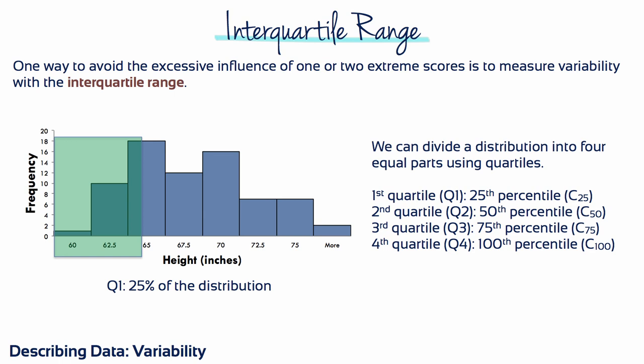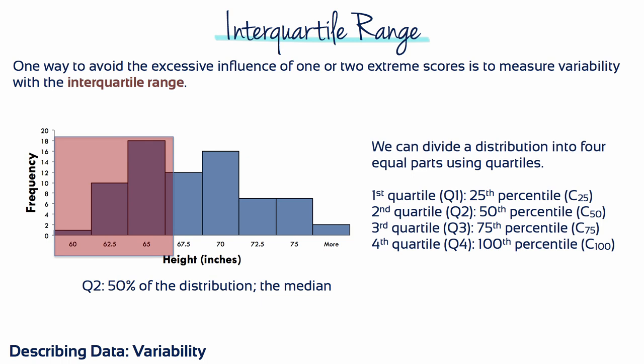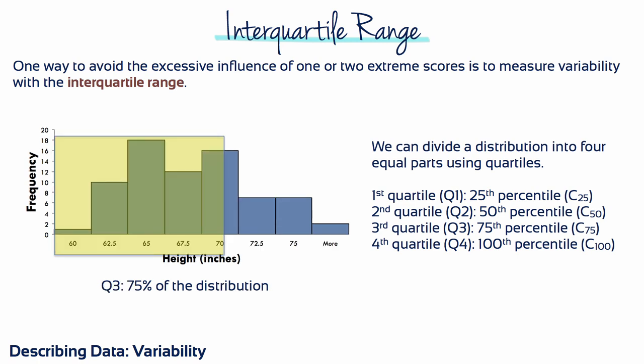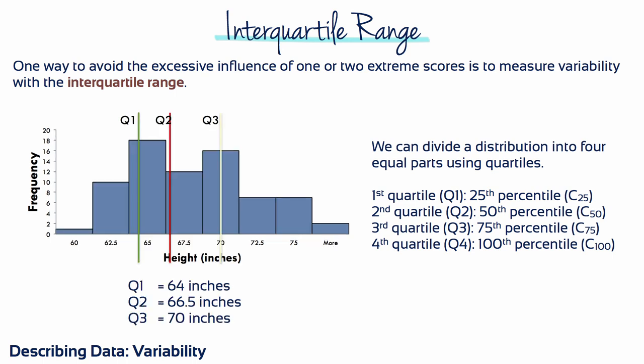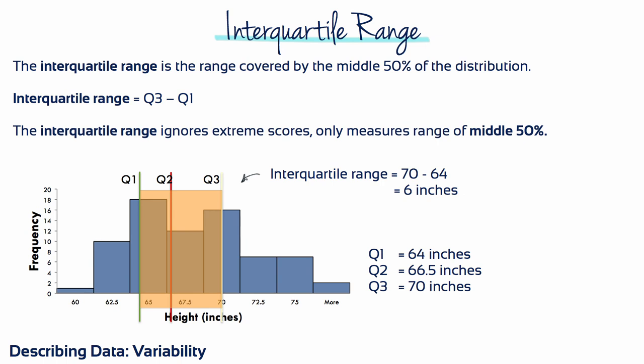One way to avoid the excessive influence of one or two extreme scores is to measure variability with the interquartile range. The interquartile range ignores extreme scores. Instead, it measures the range covered by the middle 50% of the distribution. We can divide a distribution into four equal parts using quartiles. Q1 is the quartile that represents the bottom 25% of the distribution. Q2 represents the bottom 50% and is equivalent to the median, whereas Q3 indicates the boundary that separates the top 25% of the distribution from the rest. The interquartile range is defined as the distance between the first quartile and the third quartile.